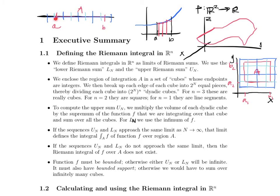To compute the upper sum, we multiply the volume of each dyadic cube — volume means length in 1D, area in 2D, and volume in R³ — by the supremum of the function f over that cube, and sum over all cubes. What's the greatest function value over this cube? Multiply it by its length, plus the greatest over the next cube times its length, and so on. For the lower Riemann sum, we take the infimum of the function value over each dyadic cube and multiply by its volume.